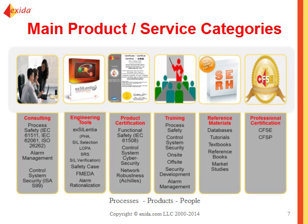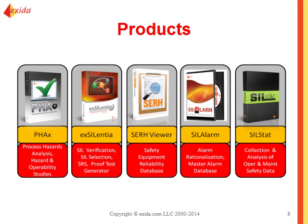We have reference materials including databases, textbooks, reference books, and market studies. We also have professional certification programs: the Certified Functional Safety Expert and Certified Functional Safety Professional. Our software products include FACS for process hazard analysis and HAZOP studies, Exelengia for SIL verification and selection, SRS, and improved test generator. We also have our Safety Equipment Reliability Handbook and Database, and SIL Alarm for alarm rationalization and master alarm database.